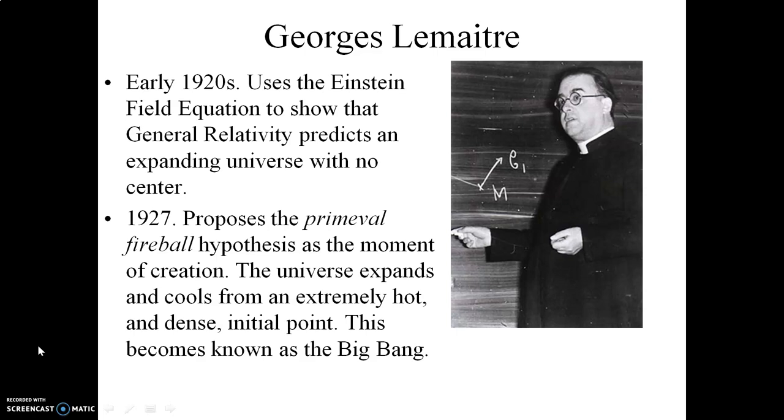Einstein himself actually did not make this mathematical prediction from general relativity. It was actually more or less pointed out to him by another physicist, this gentleman here named George Lemaitre. Lemaitre used the Einstein field equation to show that the Einstein field equation itself actually predicts an expanding universe. The irony of all this, however, is that Einstein himself actually refused to believe his own theory. His theory made a mathematical prediction about an expanding universe, and he refused to believe it.